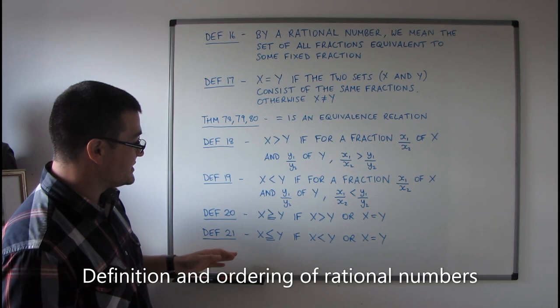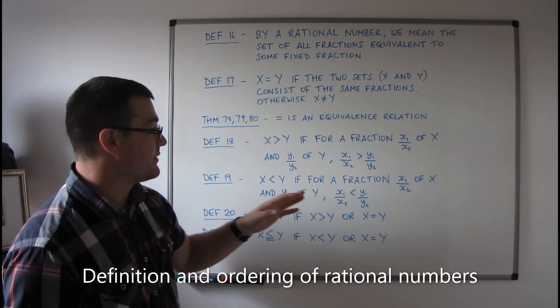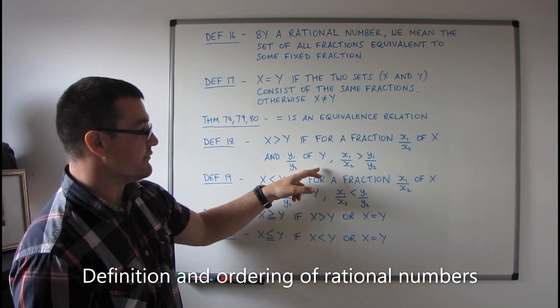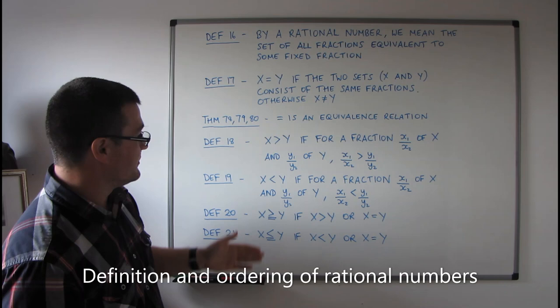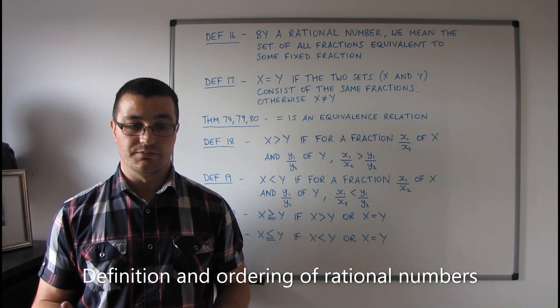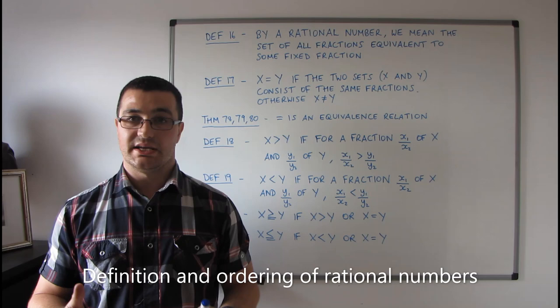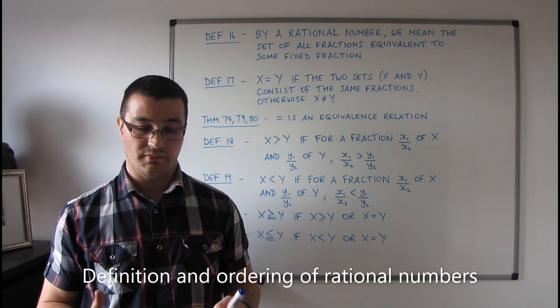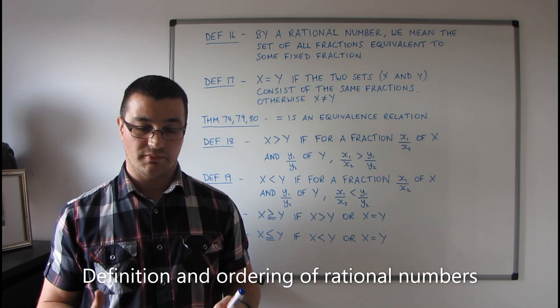Definitions 18 to 21 cover ordering of rational numbers. X is greater than Y if, for any fraction x₁/x₂ of X and any fraction y₁/y₂ of Y, then x₁/x₂ is greater than y₁/y₂. These are all very similar definitions. What we'll find with rational numbers is that a lot of the theorems have corresponding theorems relating to fractions, and the proofs of many theorems for rational numbers follow straight from the corresponding proofs for fractions.